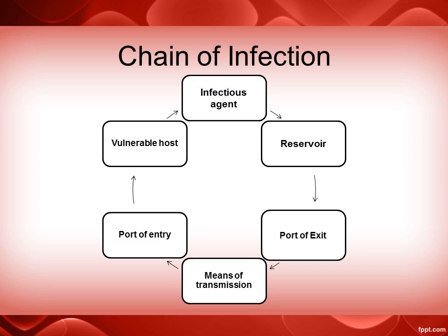The chain of infection involves six components: the infectious agent, the reservoir, the port of exit, the means of transmission, the port of entry, and the vulnerable host. As indicated by the arrows, this chain occurs in a clockwise direction, which is how we will be covering the separate elements.